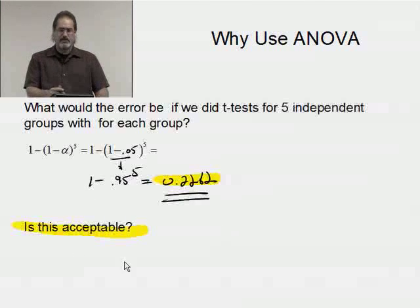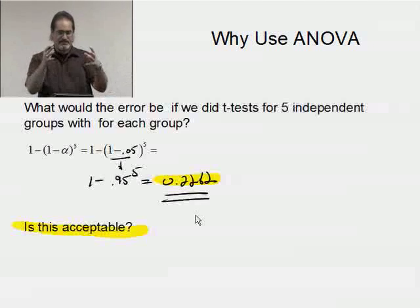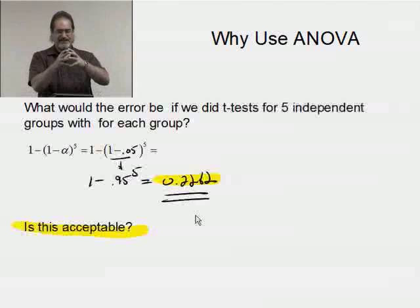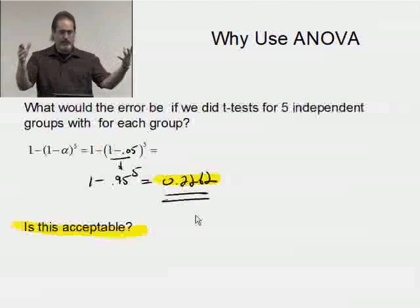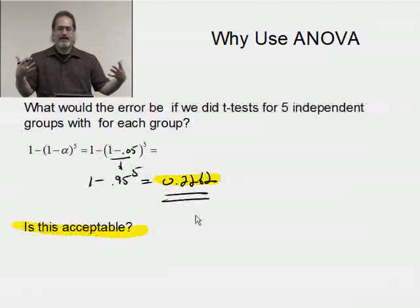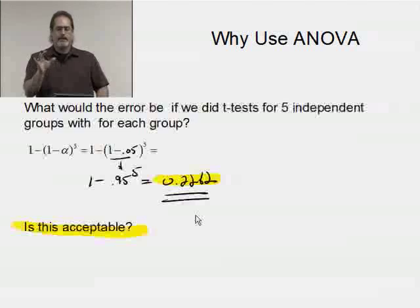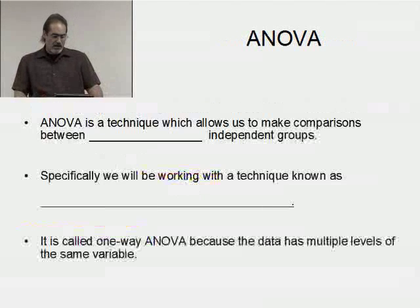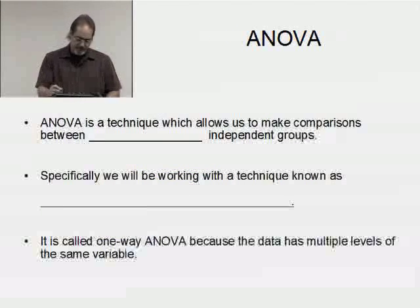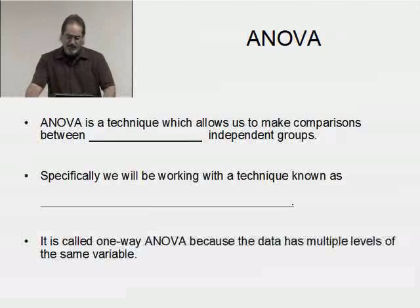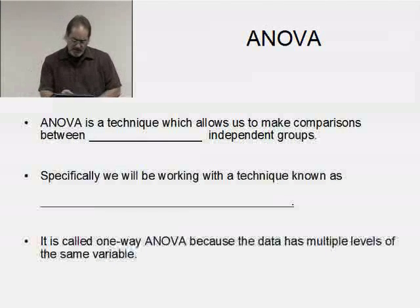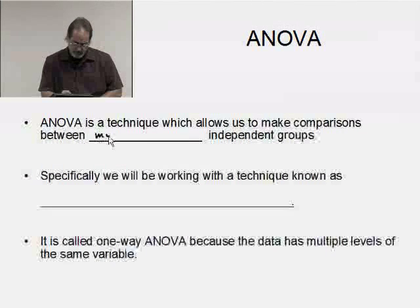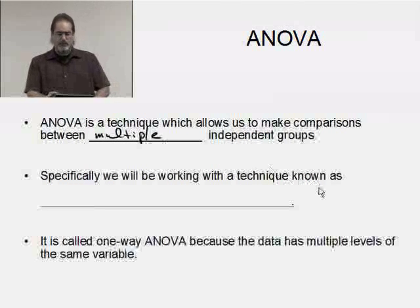That's where ANOVA comes in. ANOVA takes care of this. If alpha is 0.05, it completes the test based on all five, six, twelve, or three of those, whatever you happen to have. And if alpha is 0.05, then alpha is 0.05. That's the maximum probability of committing a type one error, which is rejecting the null hypothesis when you should not.